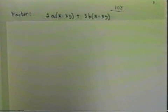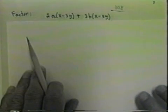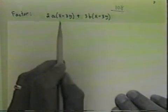Now let's factor one in which we have a binomial factor in common. Let's look at 2a times x minus 3y plus 3b times x minus 3y. Notice that both of them have the common factor of x minus 3y.